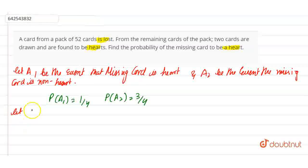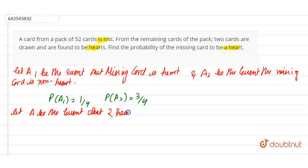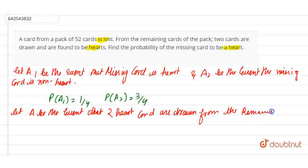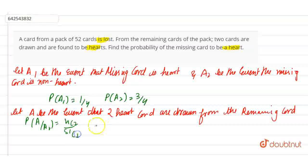Now let A be the event that 2 heart cards are drawn from the remaining cards. It is equal to P(A given A2) = 12C2 divided by 51C2.